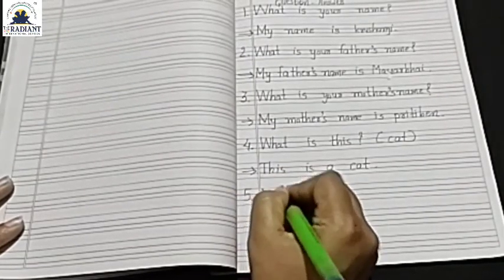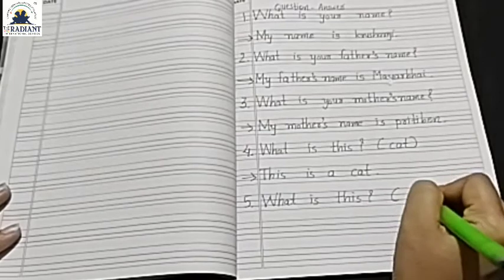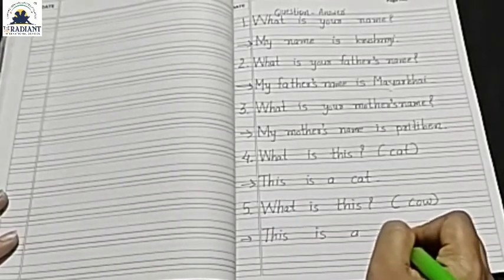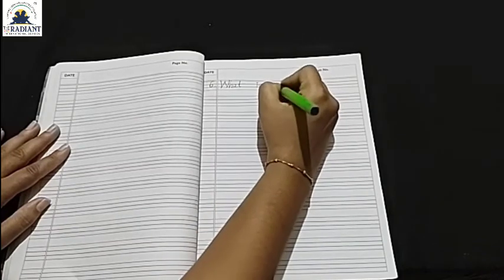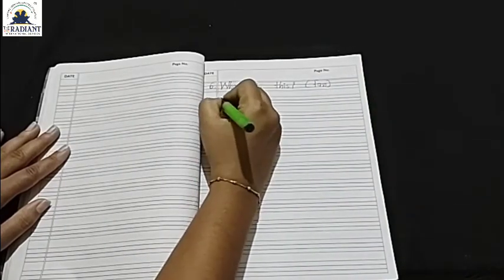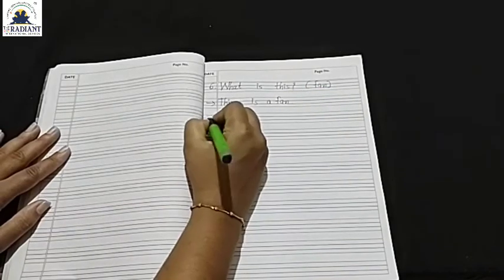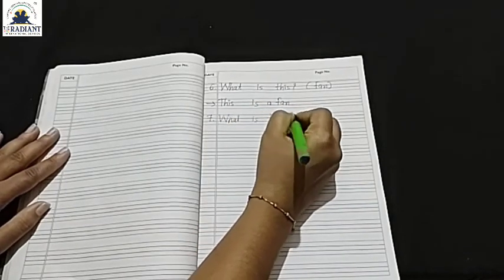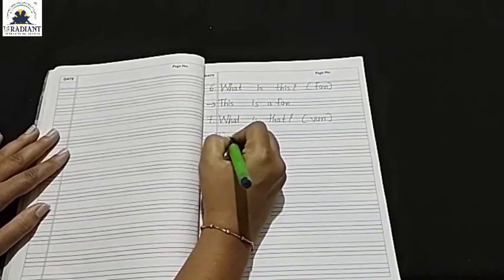Fifth number — count — what is this? Cow. So friends, this is a cow. Look here friends, what is this? What is this? This is a fan. What is this? This is a fan. What is that?